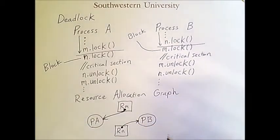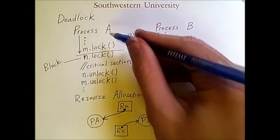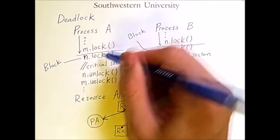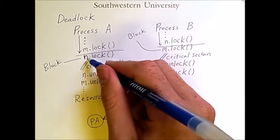And we can also draw arrows to represent resource requests. So if an arrow goes from a process to a resource, it means that the process has requested that resource but it can't claim it yet. So here, process A requests resource N,